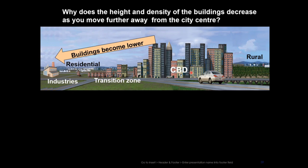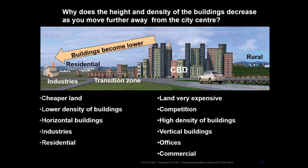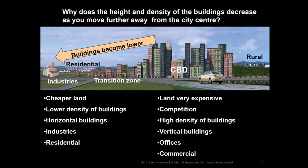Let's look at our first area. The CBD is the area in the middle where you've got your very tall buildings. Then we've got an area in between which is your transition zone. Then you have the residential area where people live. Then you have the industrial area where manufacturing takes place. And right on the edge we have the farming or rural area.